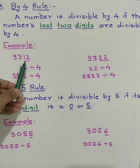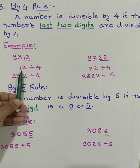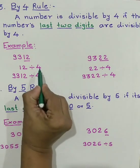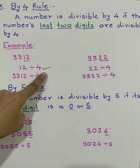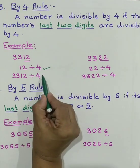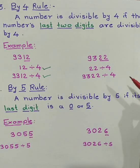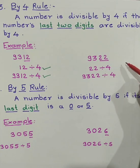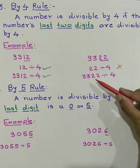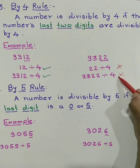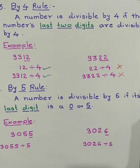Let's try with example. 9312. Here 12 is last two digits. So can we divide 12 by 4? Obviously, yes. As this test is passed, we can say 9312 can be divided by 4. Let's look at another example. 9322. 22 divided by 4 is not possible. So rule fails here. Hence, 9322 can't be divided by 4.